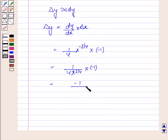Let us now substitute the value of x here. So we have 1 by 4 into 256 to the power 3 by 4.